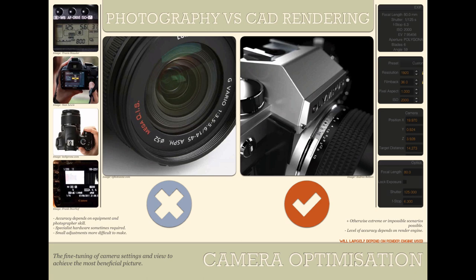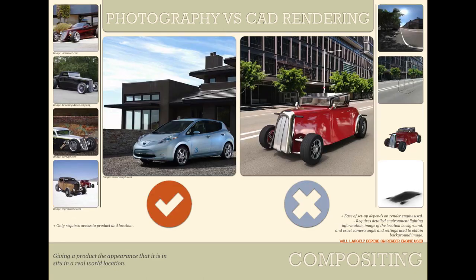In a lot of render engines nowadays you can see the results full screen very quickly. The next category was compositing — making a product look like it's in a real world location — and I decided to take an automotive theme. With a camera, this is very simple: you just need the product and the location. However, with CAD rendering, although you don't need to go to the location, you will require an HDRI of the environment for realistic illumination and reflections. Getting the perspective and lighting to match is a very time-consuming process compared to clicking a button, so photography won immediately.